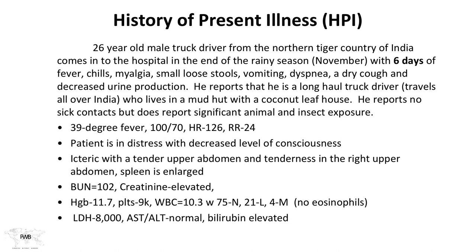On examination: temperature over 39°C, blood pressure 100/70, heart rate in the 120s, respirations in the mid-20s, decreased level of consciousness, jaundice with yellow sclera, and a tender palpable spleen. Labs showed BUN elevated at 102 (normal 20), elevated creatinine, hemoglobin 11.7 (anemic), platelets 9,000 (normal ~200,000), white cell count 10.3 with 75% neutrophils, 21% lymphocytes, 4% monocytes, and eosinopenia.